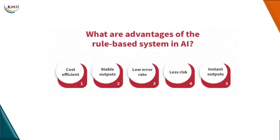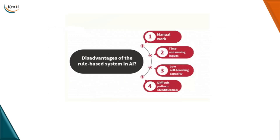The fourth advantage is less risk — it is feasible to reduce the amount of risk in terms of system accuracy. Finally, we have instant outputs: optimizing the speed of the system is easier, and providing instant outputs is not a big issue. These are the advantages of rule-based systems in AI.